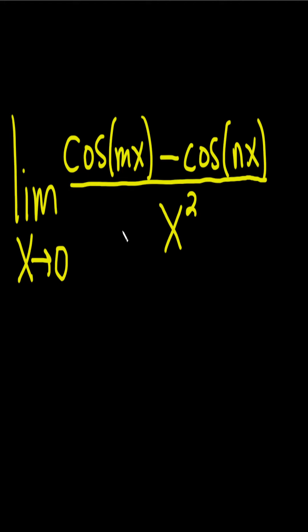Find the limit. If we plug in 0, we get the cosine of 0, which is 1, minus the cosine of 0, which is 1, over 0. So we get 0 over 0.